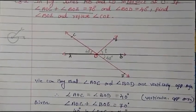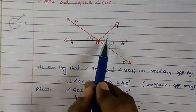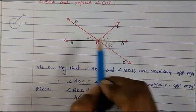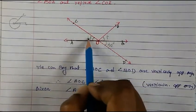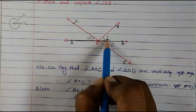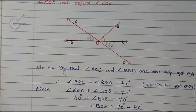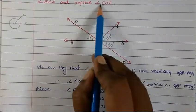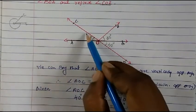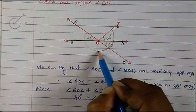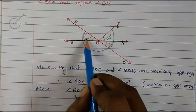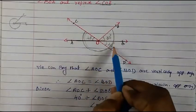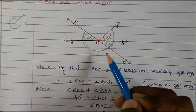So we found angle BOE equals 30 degrees. Now we need to find the reflex angle COE. The reflex angle COE is the whole region going around from C to E the long way. We know angle AOC is 40, angle BOE is 30, and angle BOD is 40. We need to sum these up along with the straight line.